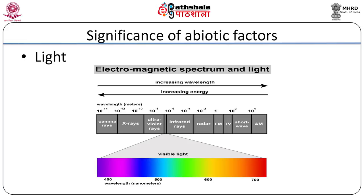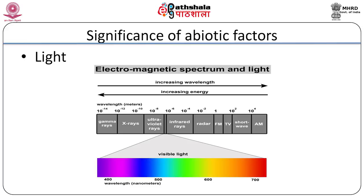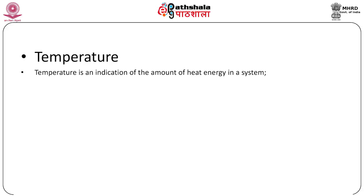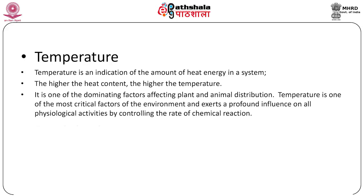To compensate, some algae in water have additional pigments which are able to absorb other color wavelengths of light. Temperature is an indication of the amount of heat energy in a system — the higher the heat content, the higher the temperature. On a worldwide basis, temperature is one of the dominating factors affecting plant and animal distribution. The Arctic, the temperate zones and the tropics are largely delimited by temperature differences.